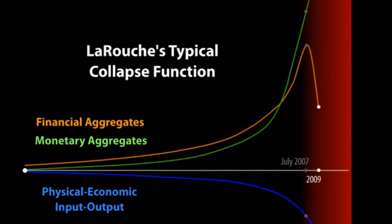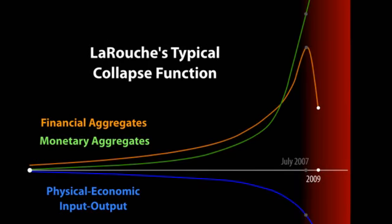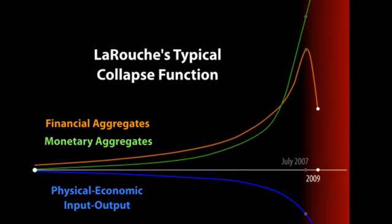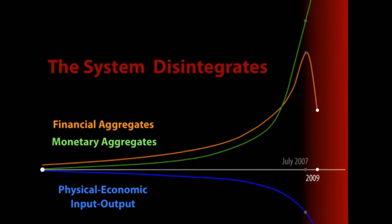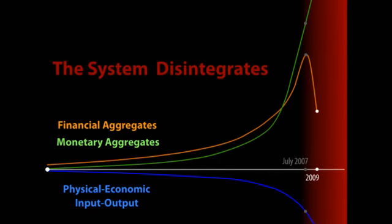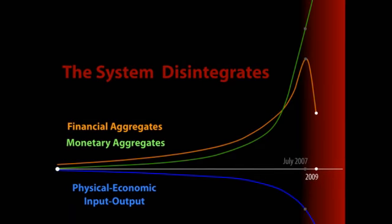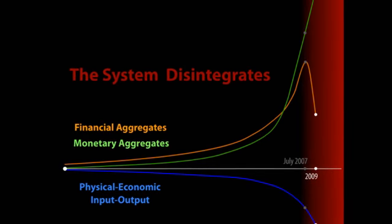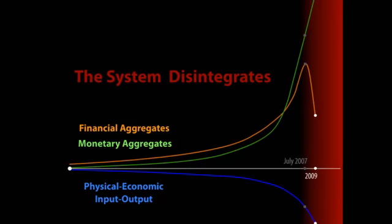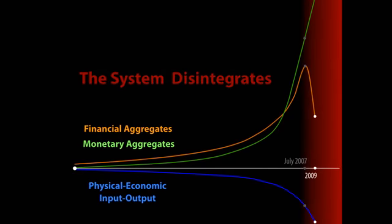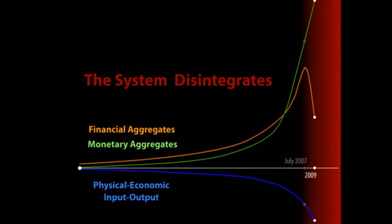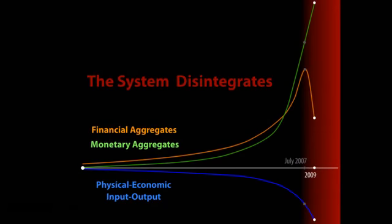This decline in financial aggregates, which has occurred just recently in this last period, is the onset of the breakdown crisis. We are dealing with this kind of situation — not what you're reading in the newspapers. This is what I presented back in 2007 in defining the problem which we face now. Either we fix this problem, as I described it, or we don't make it as a nation.